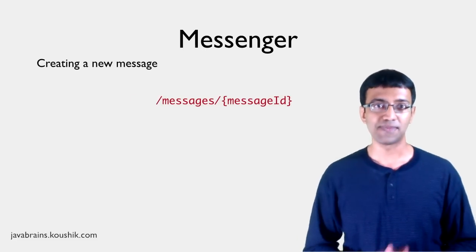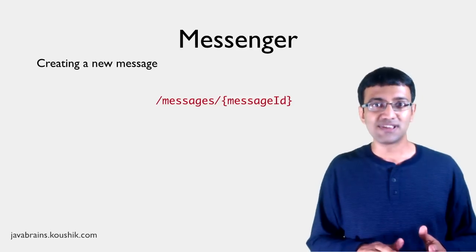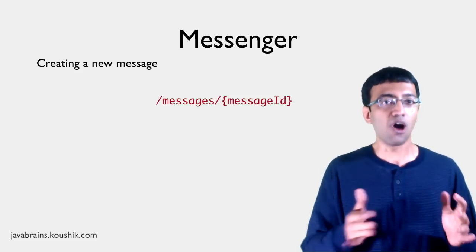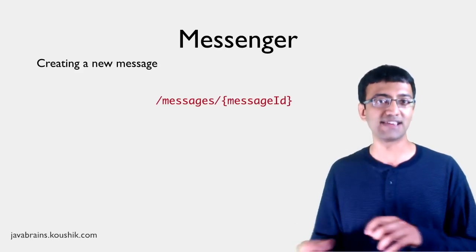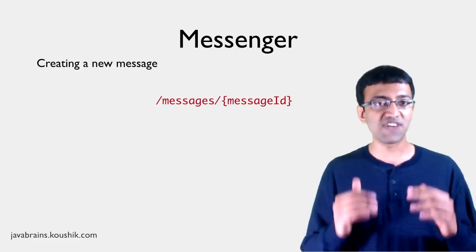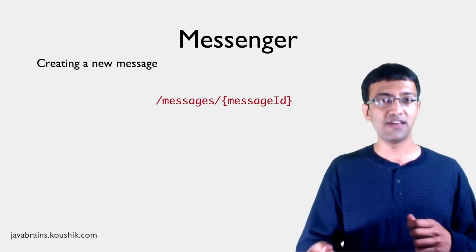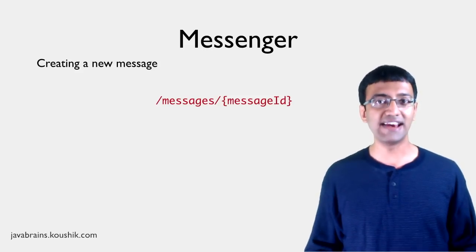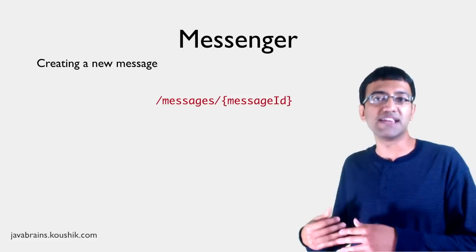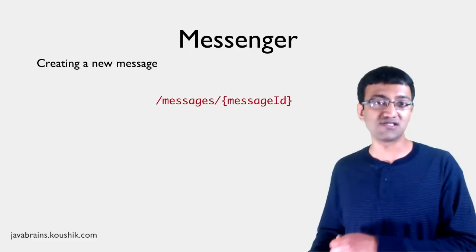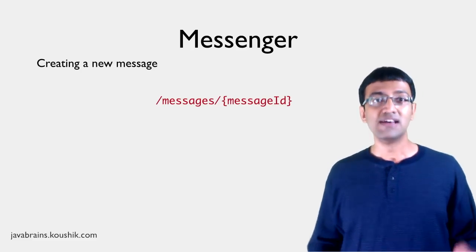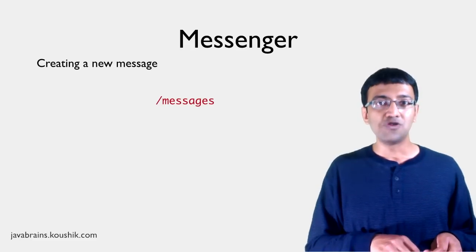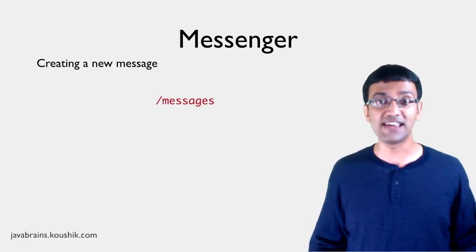Now let's look at creating a new message — this one's interesting. Before talking about the method, let's think about what the URI is. For getting, updating, and deleting a message, the URI was /messages/{messageID}. But when creating a new message, the message hasn't been created yet, so there's no message ID. The ID is typically managed by the application, which finds the next available ID and allocates it — the client has no idea what the ID will be. This is why requests for creating a new resource are always issued to the collection URI. To create a new message, you make a request to /messages.